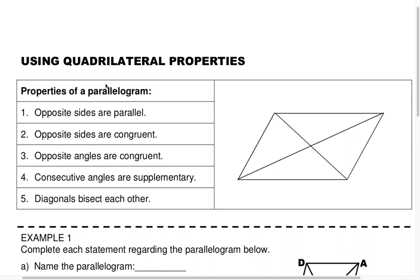Its name tips us off more than anything — 'parallel' is right in its name. So if there was no parallel nature to this, that would be a misnomer indeed. But this thing was aptly named, which brings us to property one: a parallelogram has opposite sides parallel.